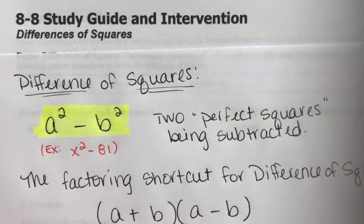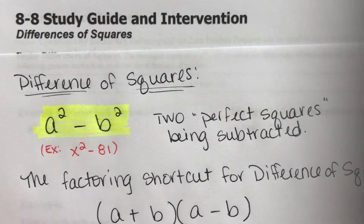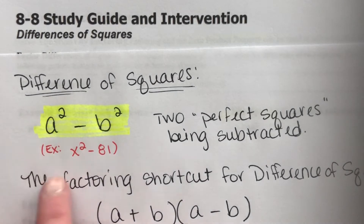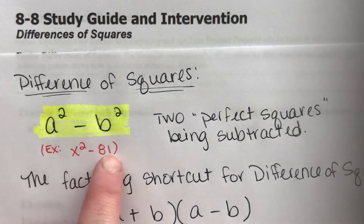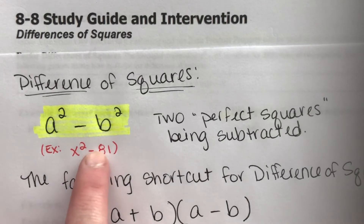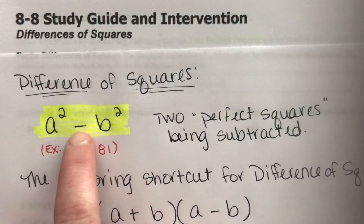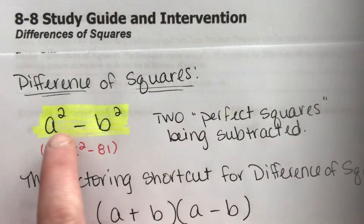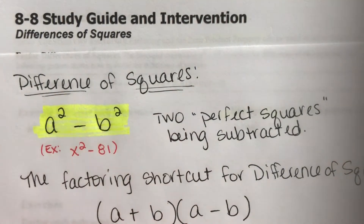In this lesson video, we're going to be reviewing differences of squares — this is lesson 8-8. For differences of squares, it's whenever we have two perfect square terms and they're being subtracted. That's what the difference is from: it's always a minus sign and squares because they're two perfect squares.